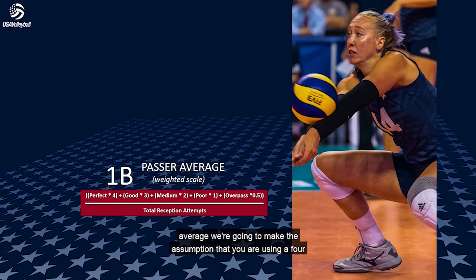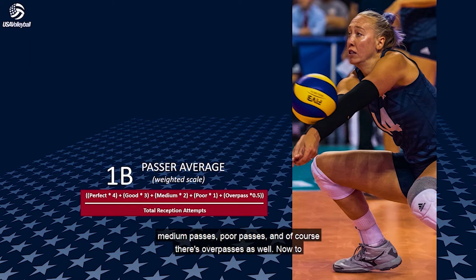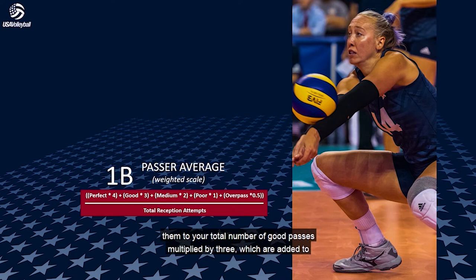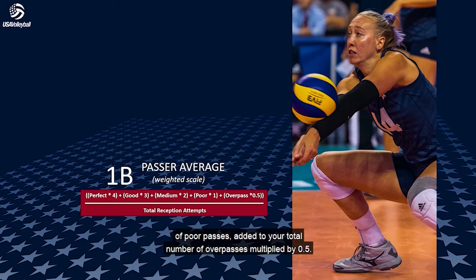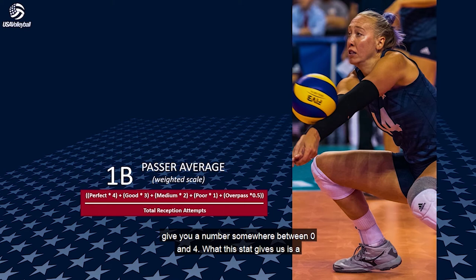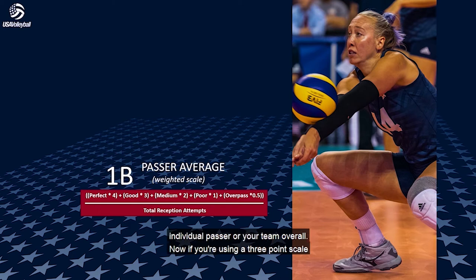For your passer average, we're going to assume you are using a four-point scale to rate your passes, meaning you have perfect passes, good passes, medium passes, poor passes, and overpasses. To calculate, take your total number of perfect passes multiplied by four, add your total good passes multiplied by three, add your total medium passes multiplied by two, plus your total poor passes, plus your total overpasses multiplied by 0.5. This total is divided by your total reception attempts, giving you a number between zero and four. This stat provides context into the overall quality of pass attempts for an individual passer or your team overall.